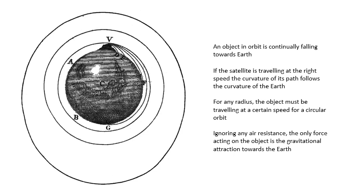An object in orbit is continually falling towards the Earth. If the satellite is traveling at the right speed, it follows the curvature of the Earth and never hits it — provided there is nothing to slow it down, like air resistance. For any given radius, the object must be traveling at a certain speed for a circular orbit.